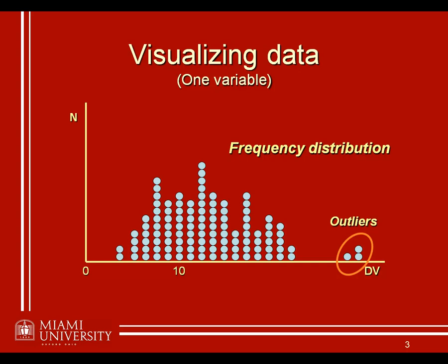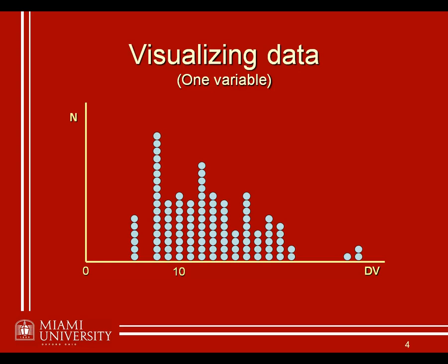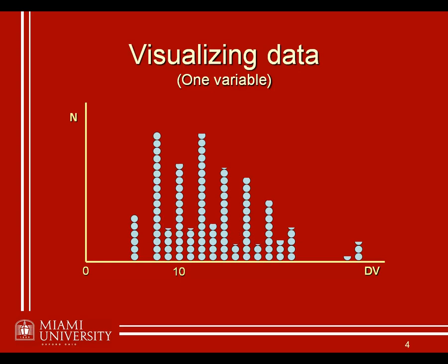One thing we can do is take a frequency distribution and essentially decrease the resolution, or smooth it out a little bit, to get rid of some of these idiosyncratic peaks and valleys. Instead of showing the people who scored each individual score, we're going to do what we call binning our values. We create a bin of not just people who scored 6, but put 6 and 7 together, or 5 and 6 together, 7 and 8 together. We take the people who scored 9, put those on top of the people who scored 10, and so forth.